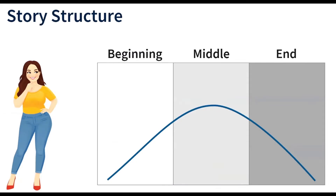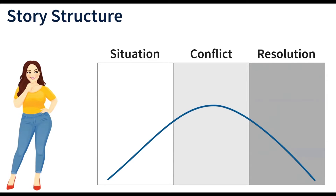Stories tend to have a pretty familiar structure. There are some options in how you can structure a story, but it often takes the form of a recognizable beginning, middle, and end with a narrative arc that goes through it. You might also know this as situation, conflict, and resolution. In the beginning, we introduce our context or setting as well as our characters. Then we introduce the conflict, build up to a climax, and come to the resolution where the conflict is solved.